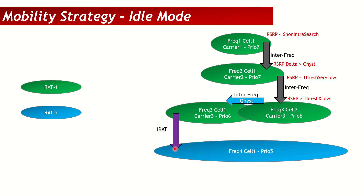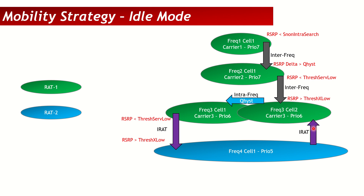For IRAT reselection from a higher priority to a lower priority RAT, the parameters are similar: the user on the source cell must be below threshold-serving-low, while the target RAT must be above threshold-x-low. If talking about 5G to 4G, the source is 5G and target is LTE. For 4G to 3G, the source is 4G and target is 3G. This is how a user moves from a higher priority to a lower priority RAT.